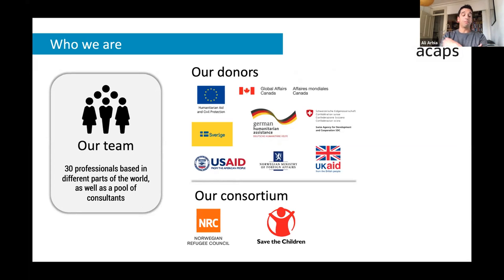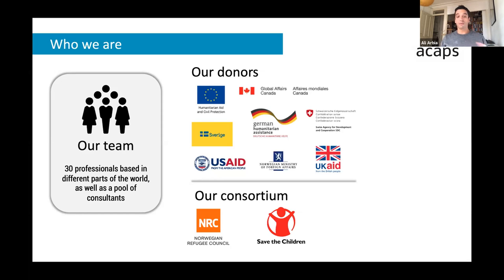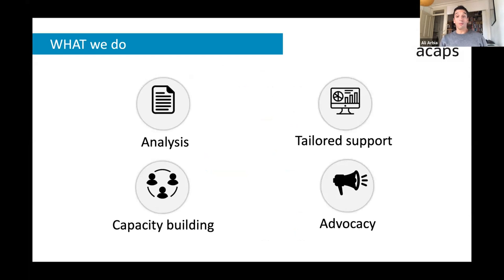ACAPS is a team of probably now about 40 people. We have hubs in Bangladesh and Colombia, and I'm based in Geneva where the biggest group is working and where a lot of the analysis is happening. We have various donors — they change every year. In terms of governing structure, we have a consortium in charge composed of the Norwegian Refugee Council and Save the Children. There are four areas where we are active: we do analysis and tailored support, which is what my team does quite a lot of; we also do capacity building through humanitarian training courses; we do data development; and advocacy.